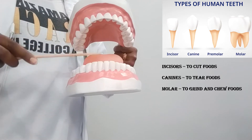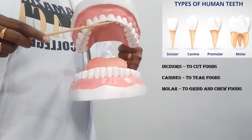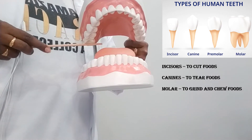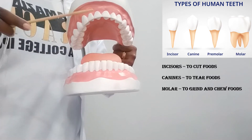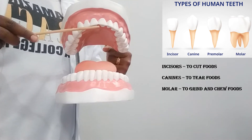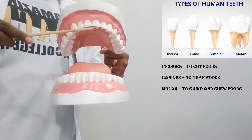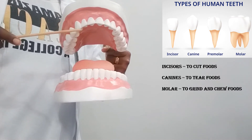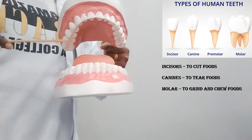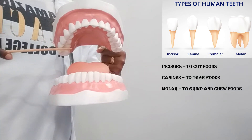So this is the upper and this is the lower. The front teeth are the incisors. The following sharp teeth are the canines. And underneath, all those teeth are known as molars. Now let's look at their functions. The function of incisors is to cut the food. The function of canine teeth is to tear the food. And the function of the molars is to grind the food.